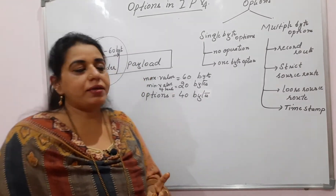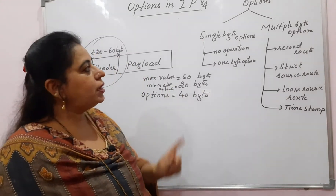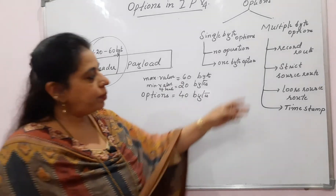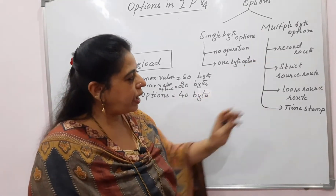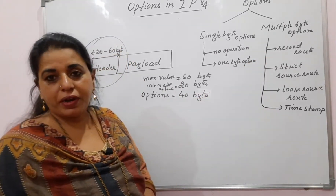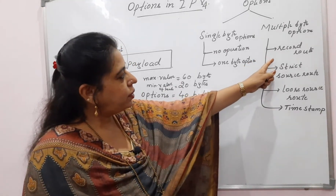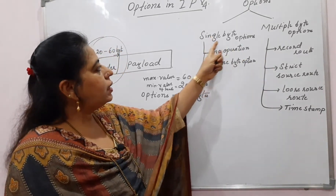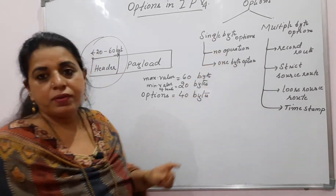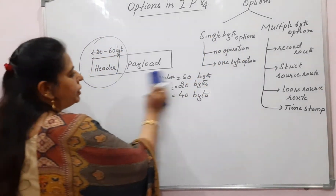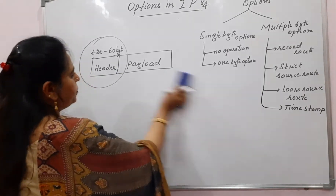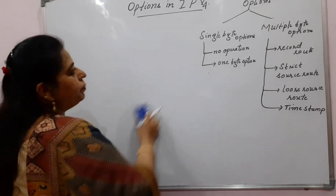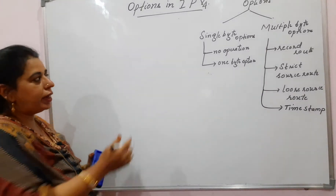Options can be categorized into two types: single byte options and multiple byte options. In multiple byte, we have four different types. In single byte, we have two — no operation and end of option list. Let us see them one by one. The multiple byte options include record route, strict source route, loose source route, and timestamp.